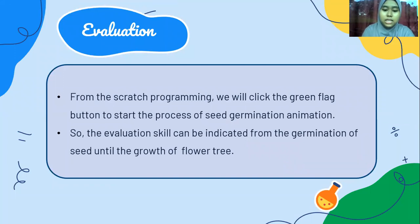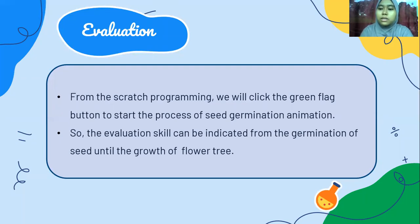Last but not least is evaluation. For the evaluation skill, we will click the green flag button to start the process of the seed germination animation in Scratch programming. The evaluation skill can be indicated from the germination of the seed until the growth of the flower tree. In the next slide, I will show how the seed germination animation is produced after compiling the blocks of coding in Scratch programming to produce a complete seed germination animation.